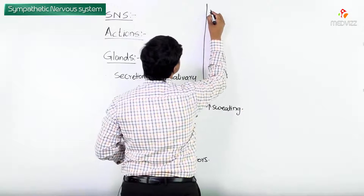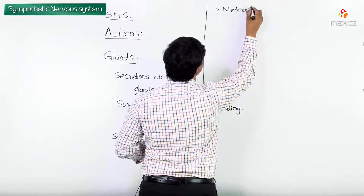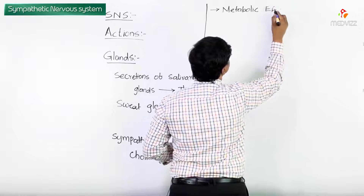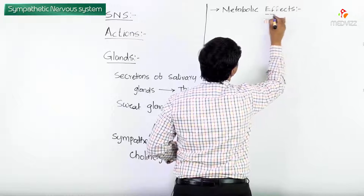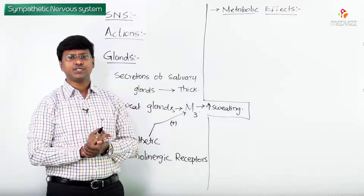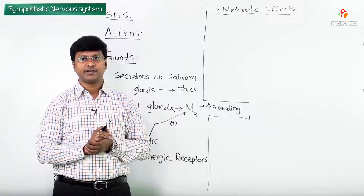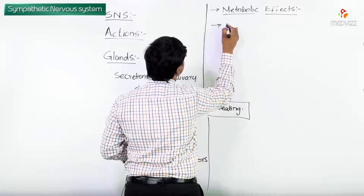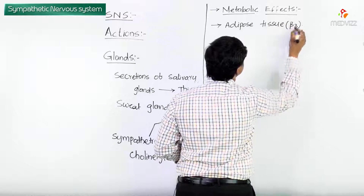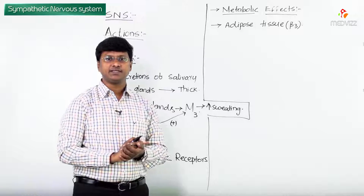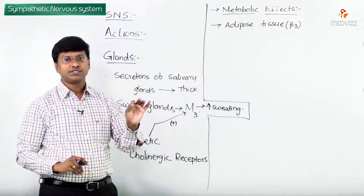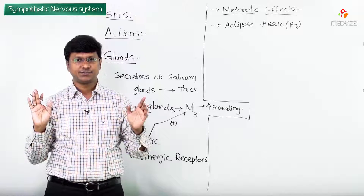Next, let me discuss the metabolic effects of the sympathetic nervous system. First, regarding fat metabolism: in the adipose tissue, the receptors present are beta-3 receptors. When these beta-3 receptors are stimulated by the sympathetic nervous system, they cause the breakdown of triglycerides to free fatty acids.